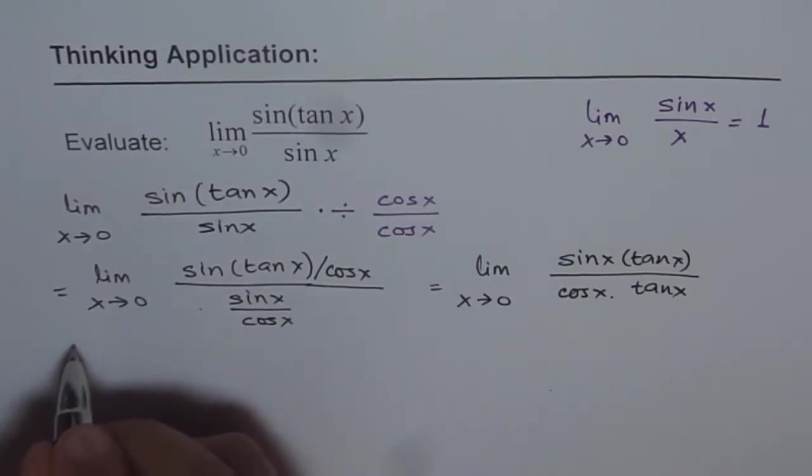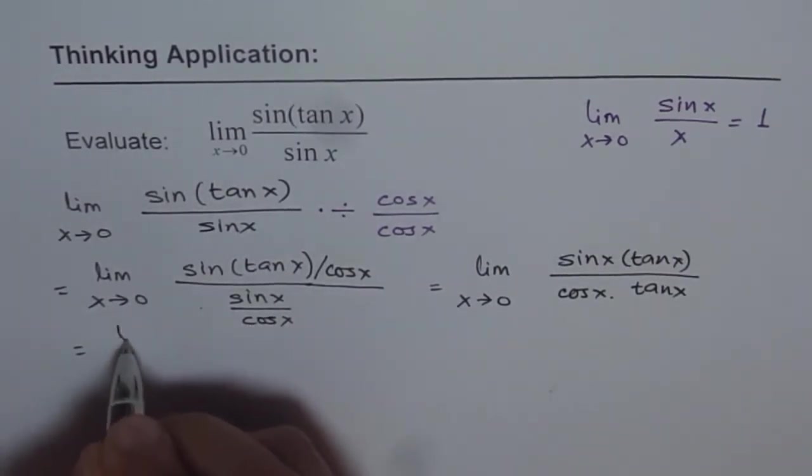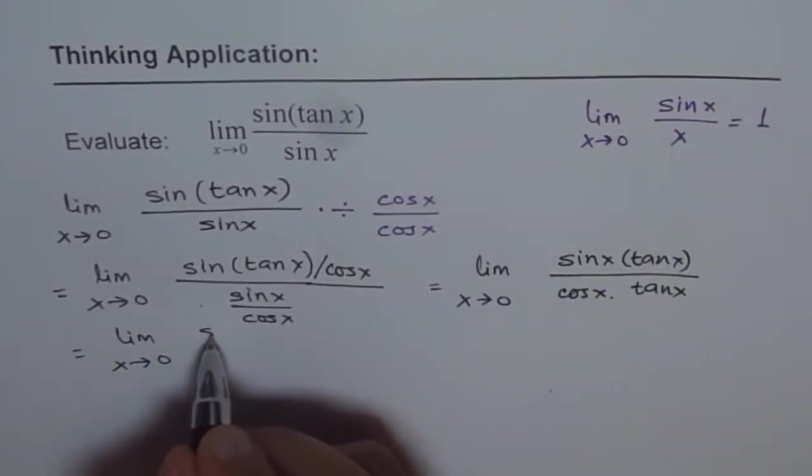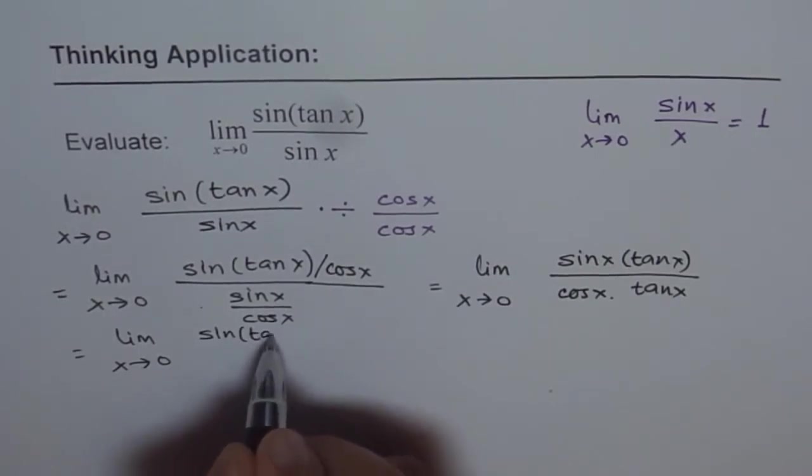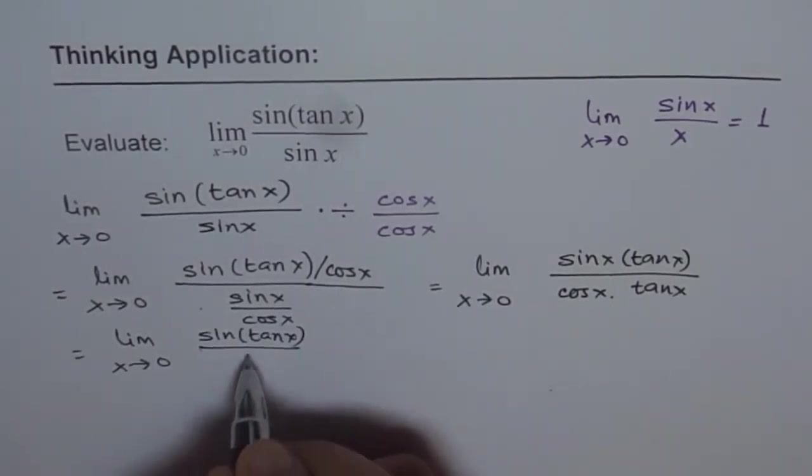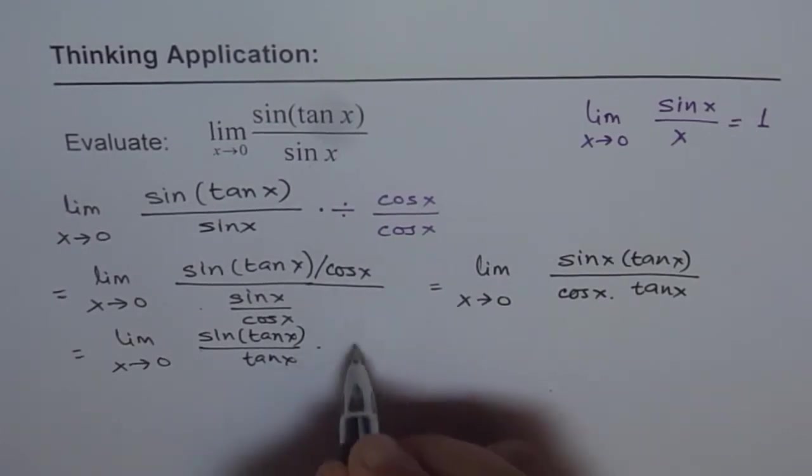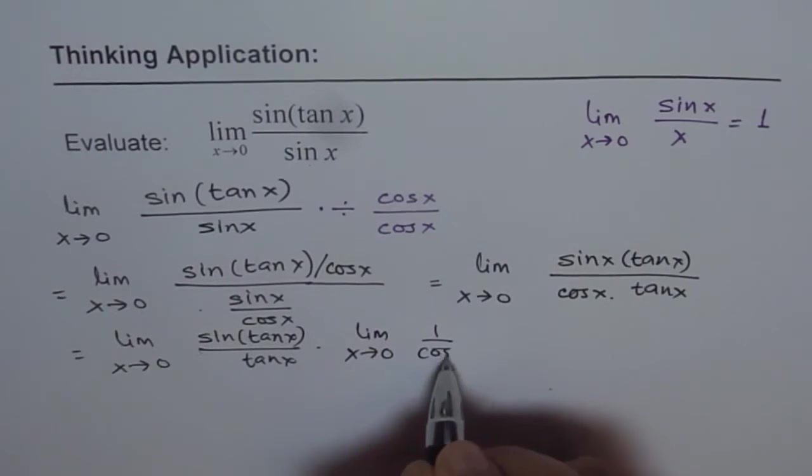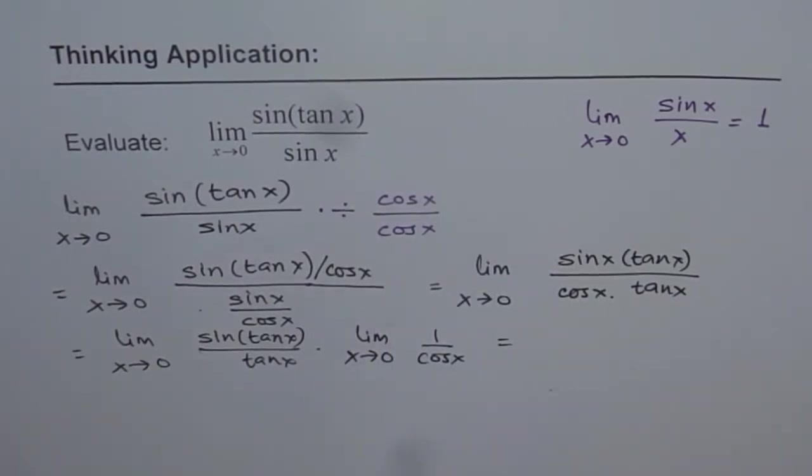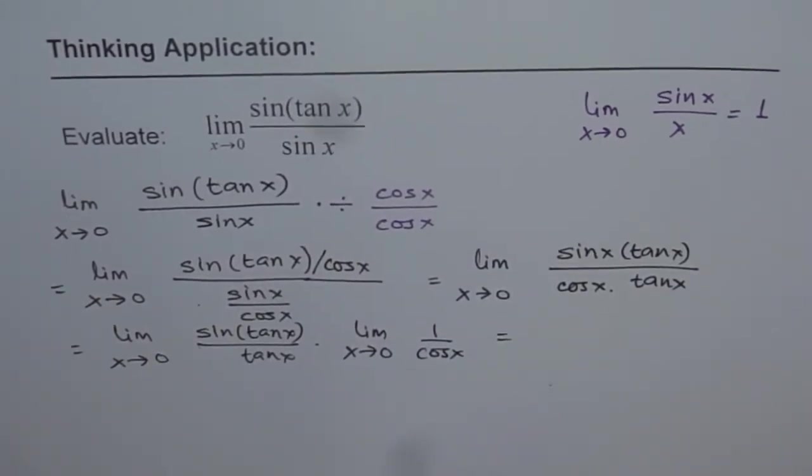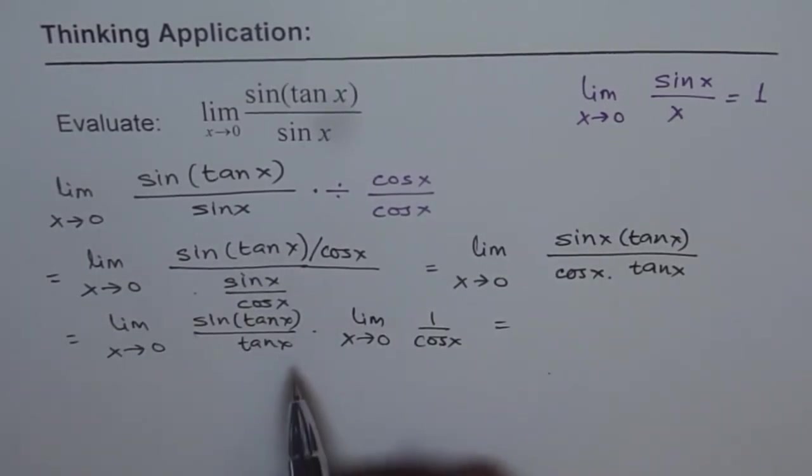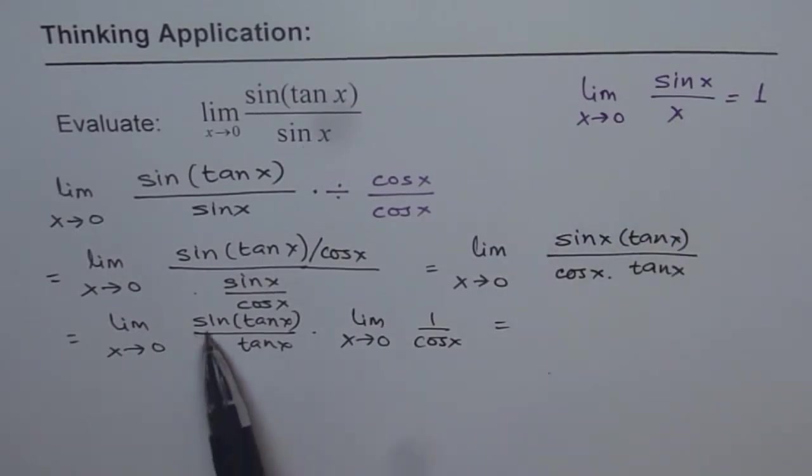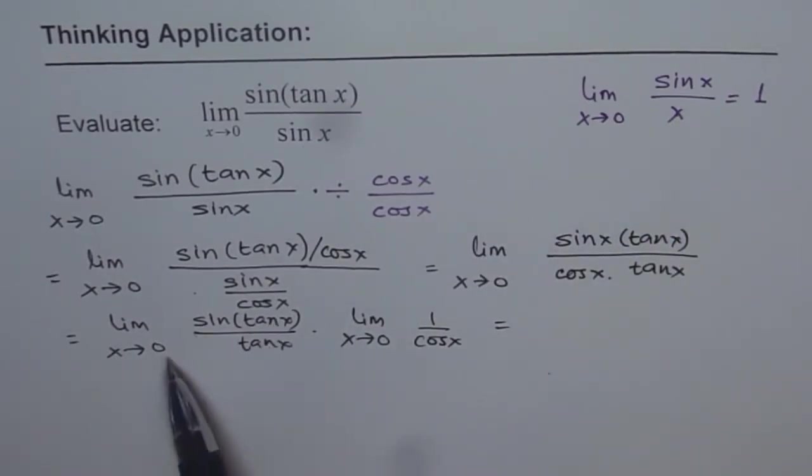So that is how we get it. We can write this as limit as x approaches 0. Now we will write this as sin(tan x) over tan x times limit as x approaches 0 for 1 over cos x. Have a good look at it. I hope you are getting the steps. Now this is kind of like sin x over x.